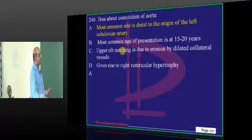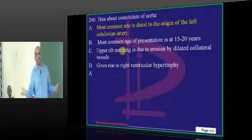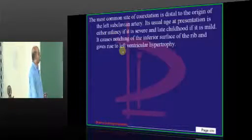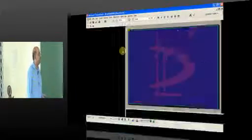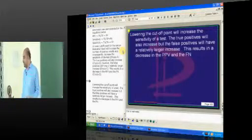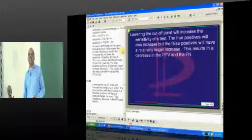Now coming to coarctation — once more to repeat: it occurs distal to the origin of the left subclavian artery. So that brings us to the end of this section.